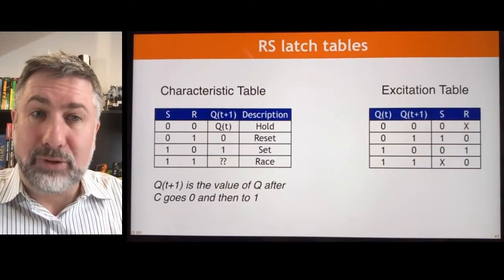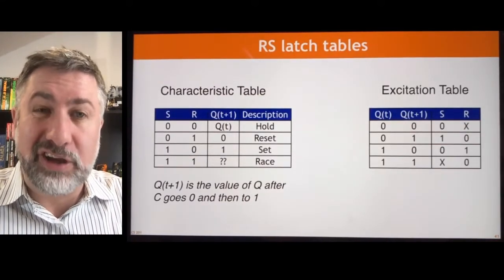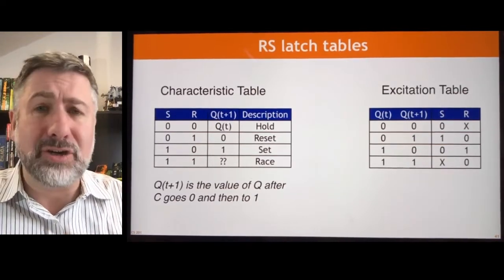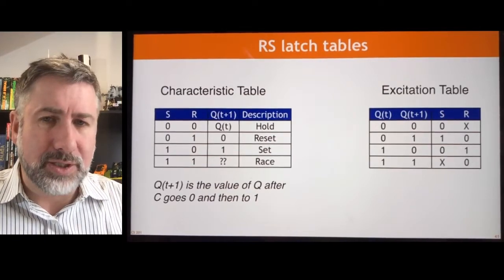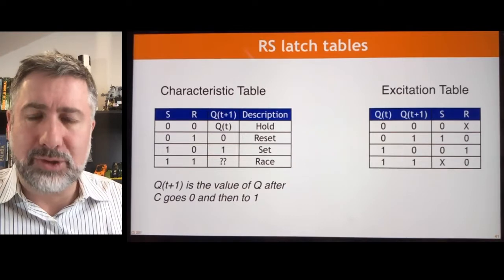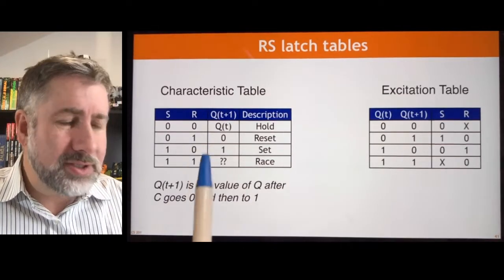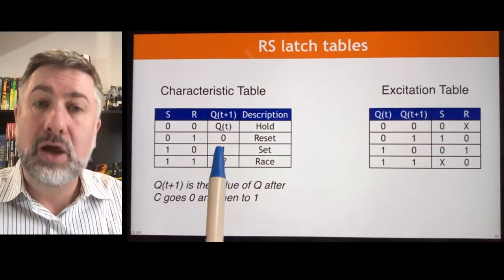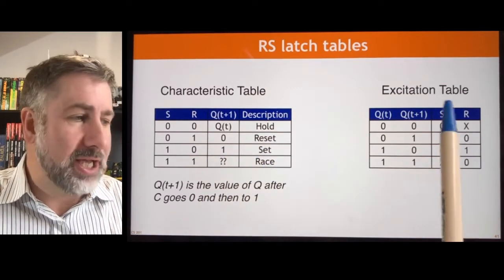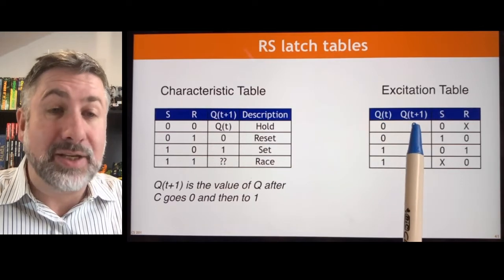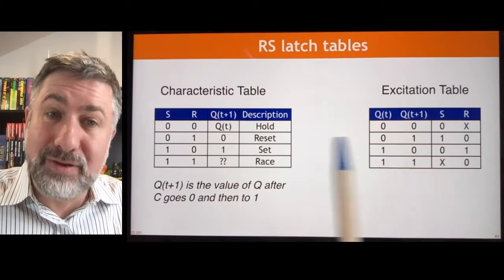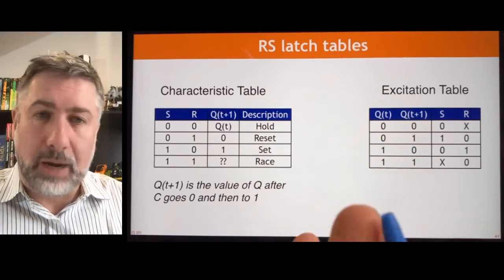Here are the characteristic table and the excitation table for the RS latch. We don't really use the RS latch in our designs very much because of that unstable race condition, but it's instructive to look at it so we can see how these two tables differ. The characteristic table says: given the inputs and the current state, what happens? The excitation table says: given the current state and a desired next state, how do I make that happen? It's the same information, just in the opposite order.